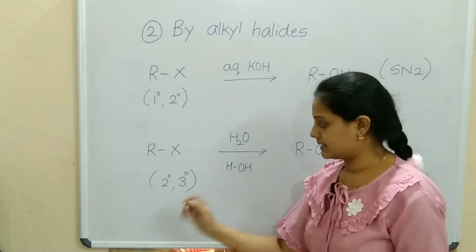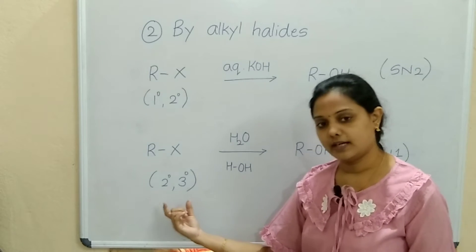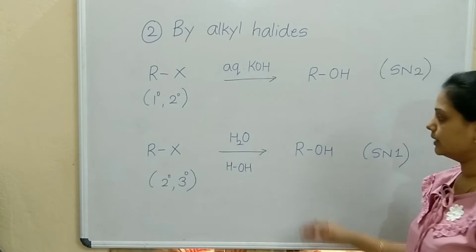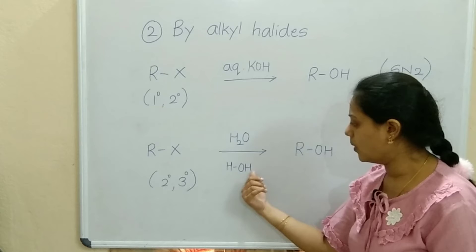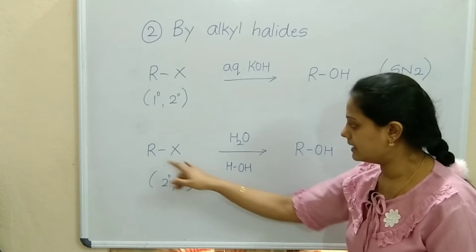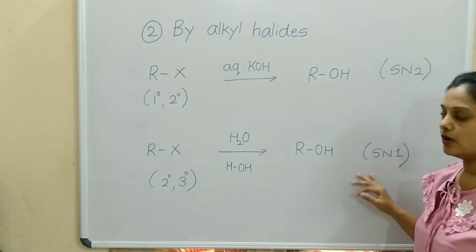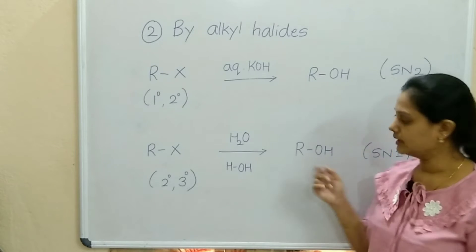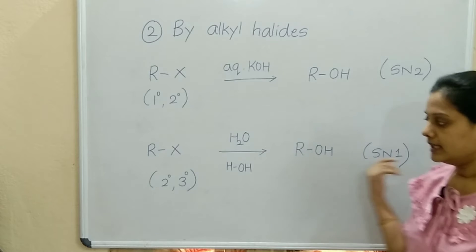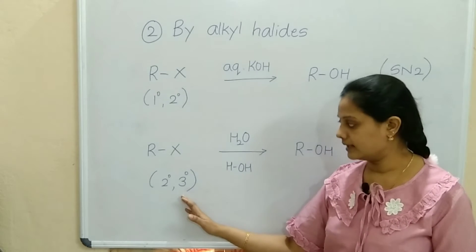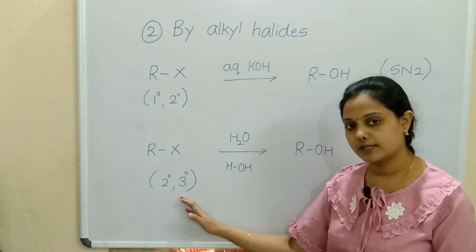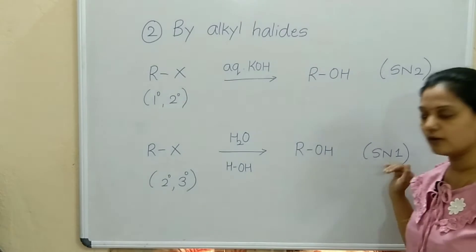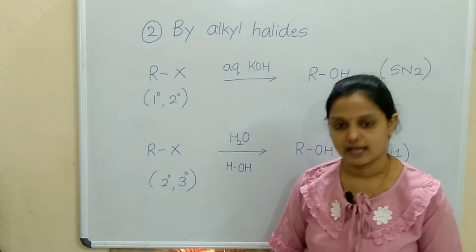Next, R-X where the alkyl halide can be secondary or tertiary. It reacts with water, combining to give R-OH, with H and X as byproducts. This follows SN1 type of mechanism. Tertiary alkyl halides are more reactive towards SN1, so if it is tertiary, it reacts via SN1 mechanism.